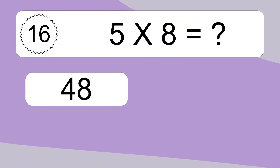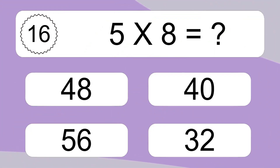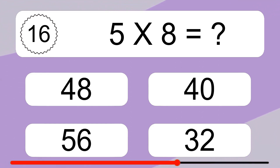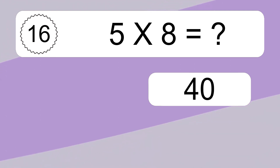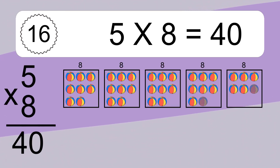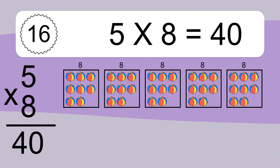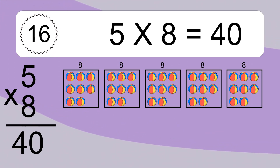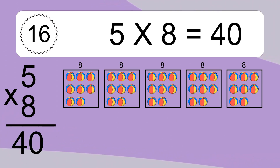Five times eight equals what? Five times eight equals forty. We have five boxes, and each box has eight colorful balls inside. If you count all the balls in all the boxes together, you will have five times eight balls. This equals forty balls.